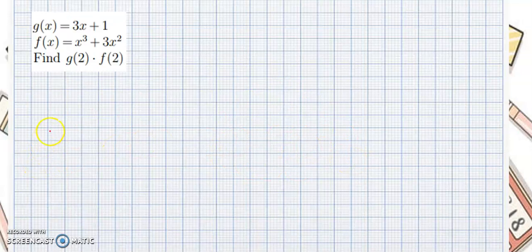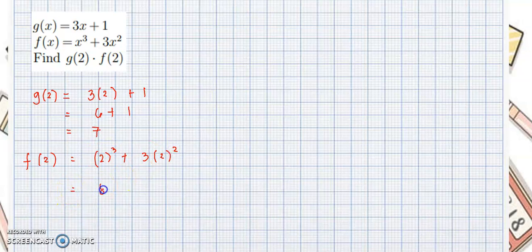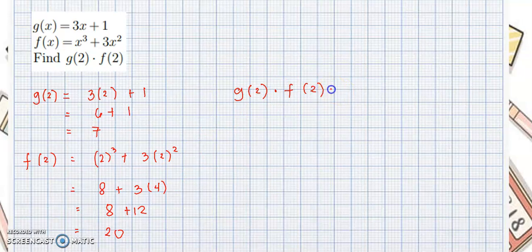For this example, we will substitute 2 for the values of x. First, g of 2 equals 3 times 2 plus 1, which equals 6 plus 1, and that is 7. Then f of 2 equals 2 cubed plus 3 times 2 squared, which is 8 plus 3 times 4, so 8 plus 12, which is 20. Then g of 2 multiplied by f of 2 is 7 times 20, so the answer is 140.